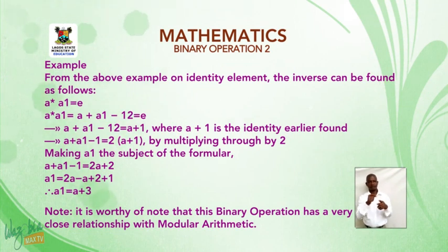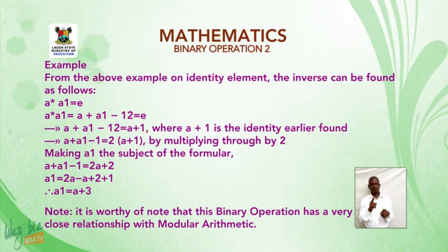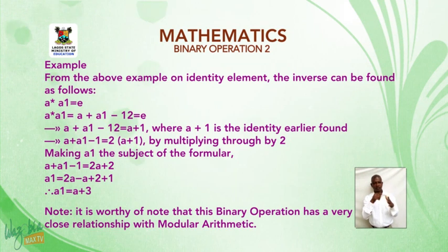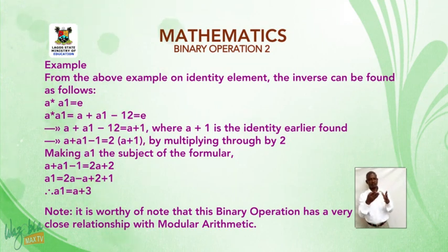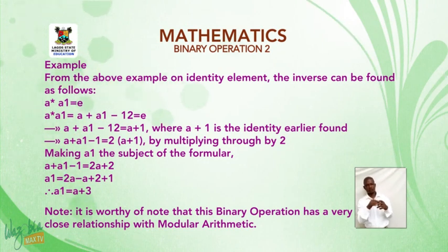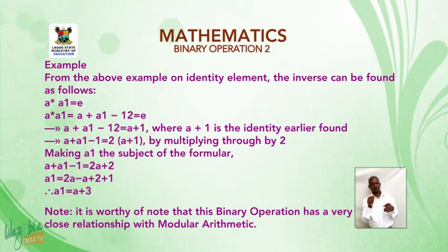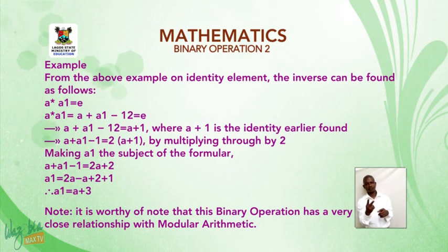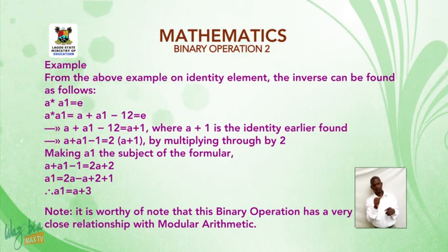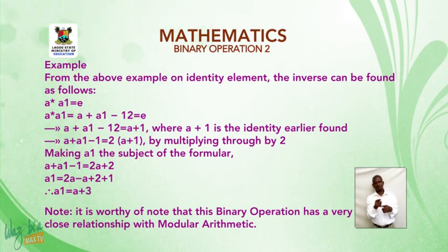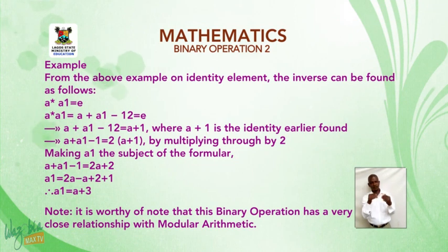Substituting the identity e = a + 1: (a + a′ − 1)/2 = a + 1. Multiplying through by 2: a + a′ − 1 = 2(a + 1) = 2a + 2. Making a′ the subject of the formula: a + a′ − 1 = 2a + 2, therefore a′ = 2a − a + 2 + 1. Therefore, a′ = a + 3.